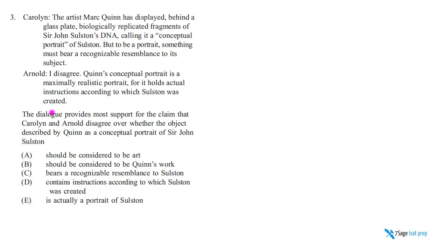But let's read it. It says: the dialogue provides the most support for the claim that Carolyn and Arnold — two speakers — what do they disagree over? They disagree over whether the object described by Quinn, which is someone in here, as a conceptual portrait of John Solstyn, should be considered art, should be considered Quinn's work, and so on. So let's see what the two of them say.